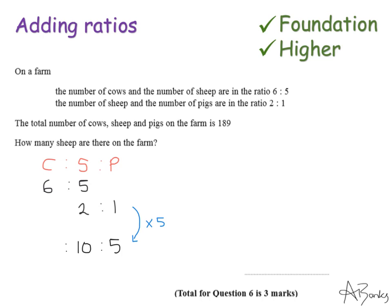And with my other ratio, to get from the 5 to the 10, I have multiplied by 2. So I'm going to multiply my 6 by 2, which gives me 12. So my ratio of cows to sheep to pigs is 12 to 10 to 5.